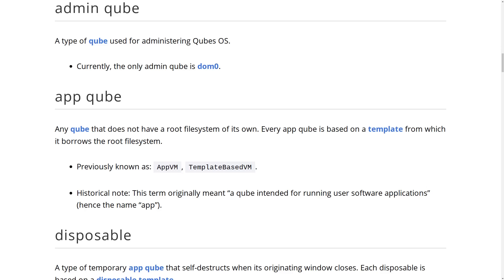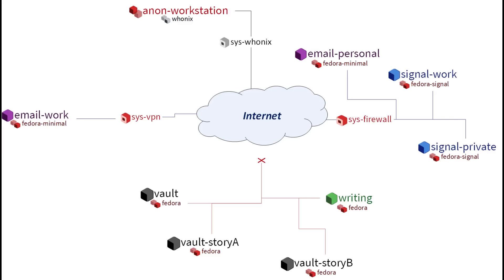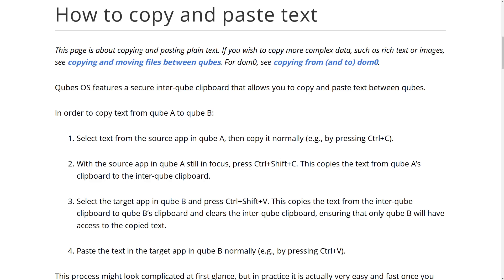Another VM that ships with Qubes, which has similar restrictions, is the Vault qube. As the name implies, the Vault qube is where you want to store your most sensitive data like your passwords, private keys, and things like that. It has no network or USB access, so your system would need to be fully compromised for the files in that vault to be accessed or deleted, giving you maximum protection for your digital secrets. The only more secure method would be to have a separate air-gapped device, but convenience drops dramatically with that approach. In Qubes OS there is an intercube clipboard that can be used to copy passwords from your Vault qube's password manager into a login form in your Whonix or Personal qube.